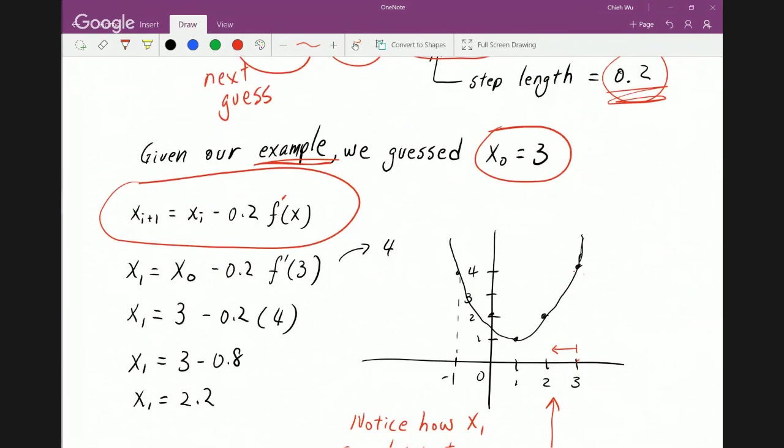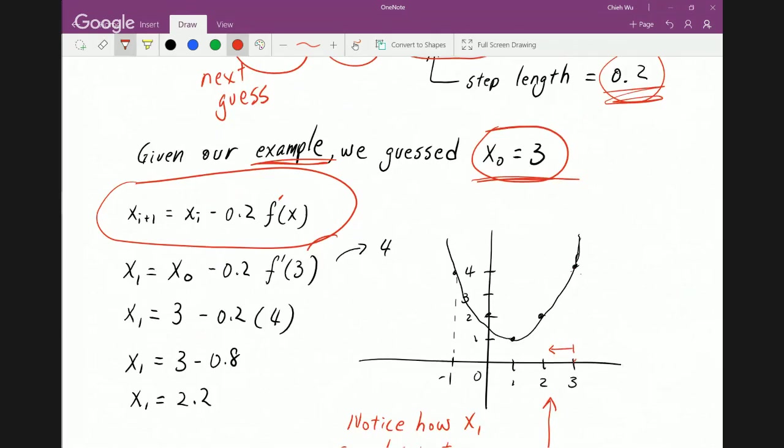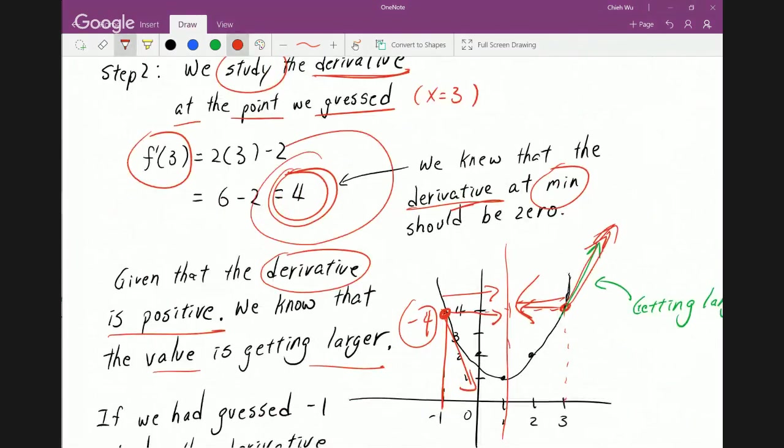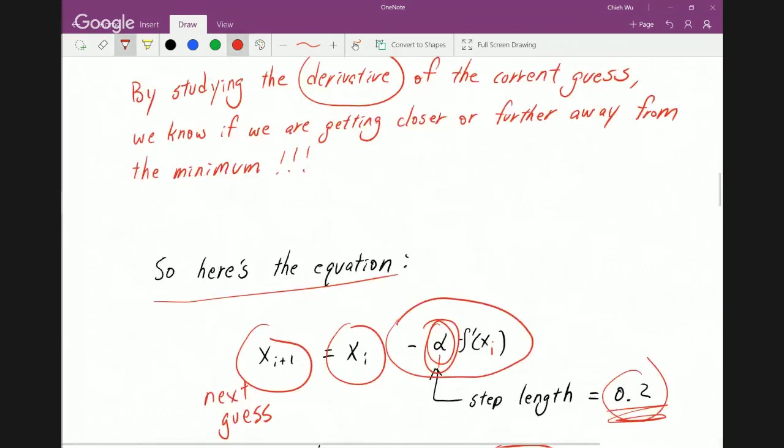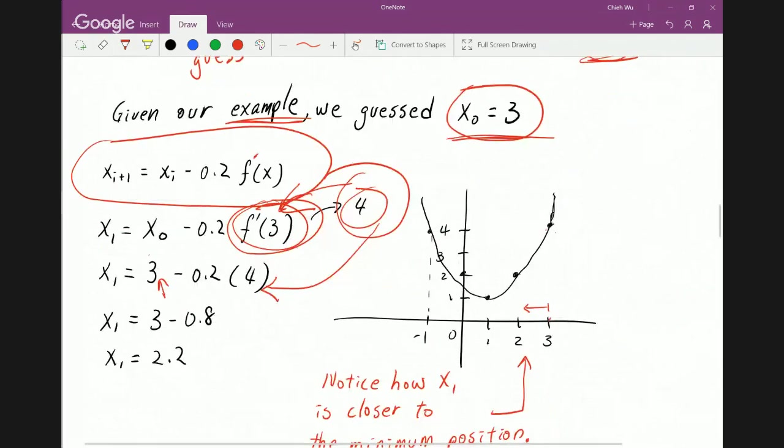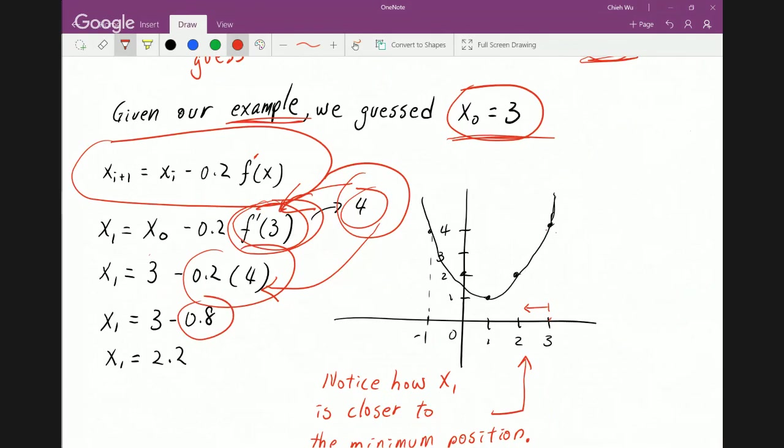With our example, what we do is we guess 3 and therefore we put 3 here as the initial as well as here as we want to find a derivative at 3. So we know that derivative here was equal to 4 because we calculated ahead of time. It was right here.